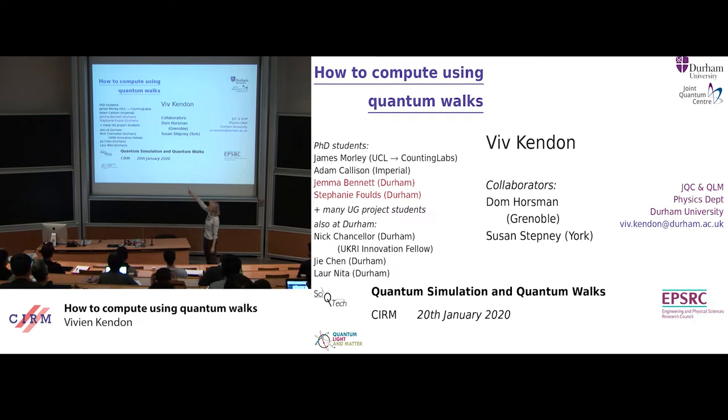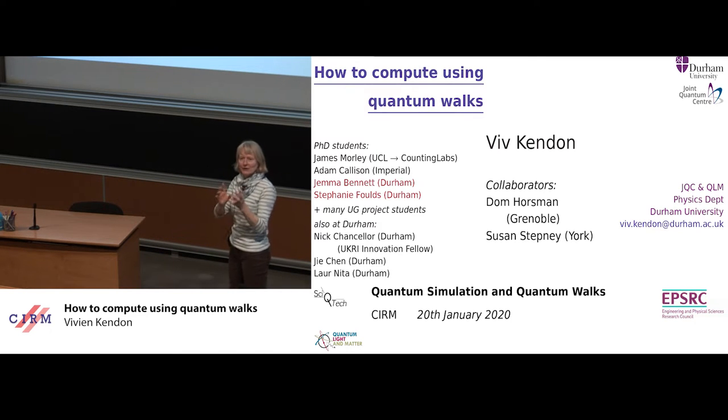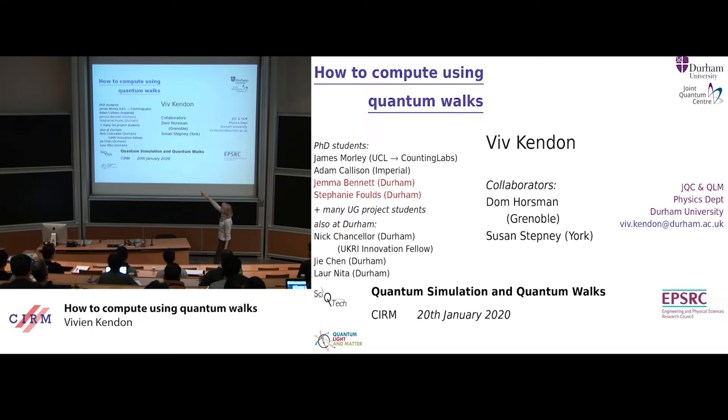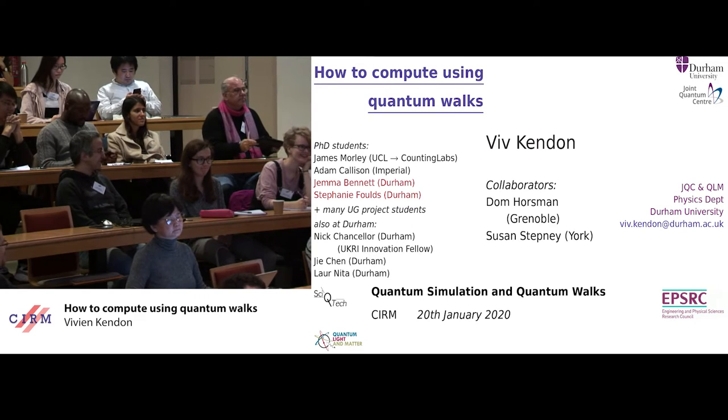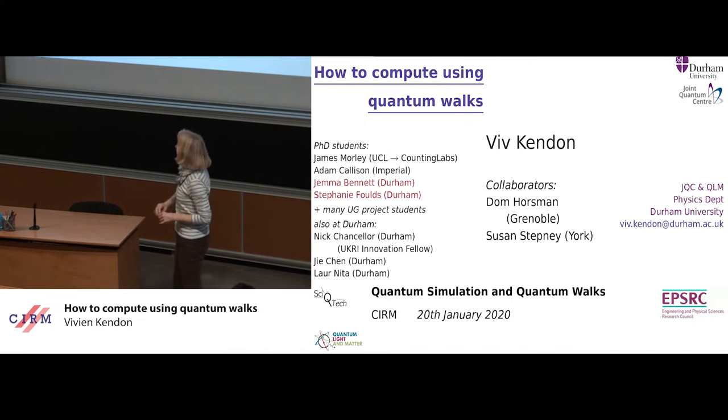So I should mention first that there are two PhD students. In the second half of my talk, I will be discussing work that they have done. James Morley has finished and is now in a mathematics startup based in Reading University in the UK. Adam Callison has a few months more of his PhD before he finishes at Imperial College also in the UK. Gemma and Stephanie are highlighted because they are here, just starting their PhDs. So good to make contacts and discussion with all of you.